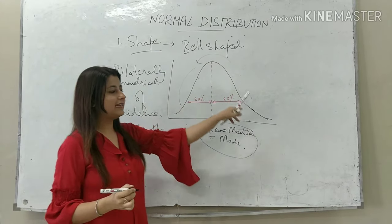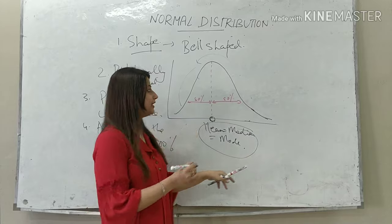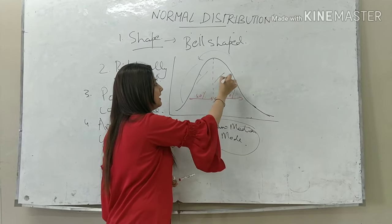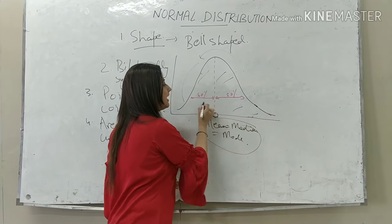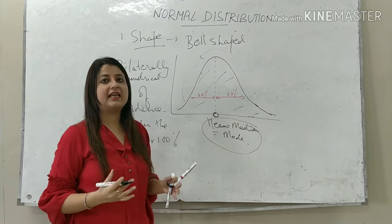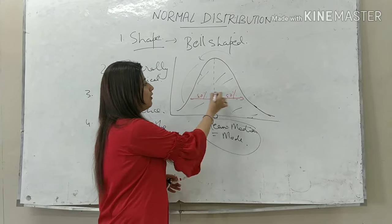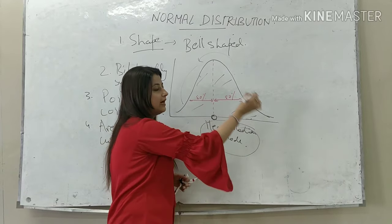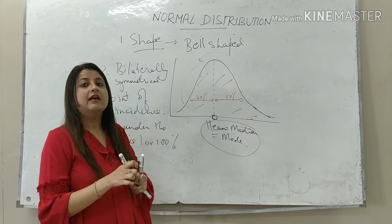Since Normal Distribution is bilaterally symmetrical, the total area under the curve can be taken as 1 or 100%.